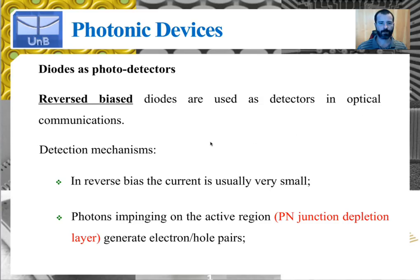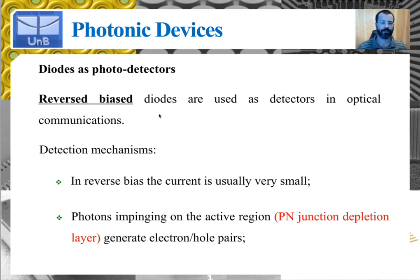Of all of the types of detectors that we have discussed in our previous lecture — photoconductors, phototransistors, photomultiplier tubes — photodiodes are the ones that are most often used in optical communication. So we're going to focus on these devices.